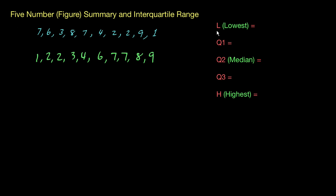We've got L which is the lowest value — that's an easy one to get, you just look for the smallest number in the data set, so number one goes right here. Then you take your highest value and we can place that here really easily.